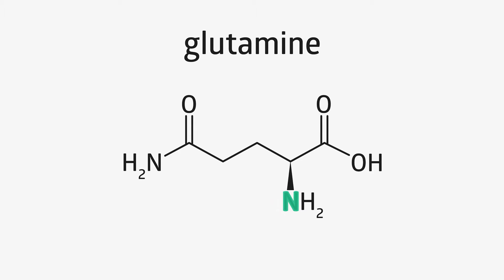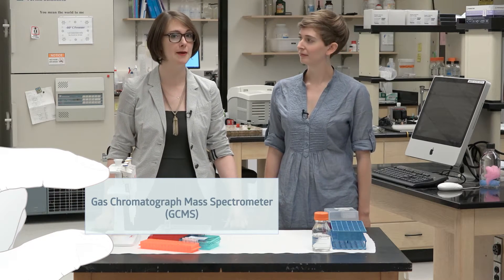So today I'm going to show you how to extract amino acid metabolites from plant tissue and then profile them using a gas chromatograph mass spectrometer or GCMS.